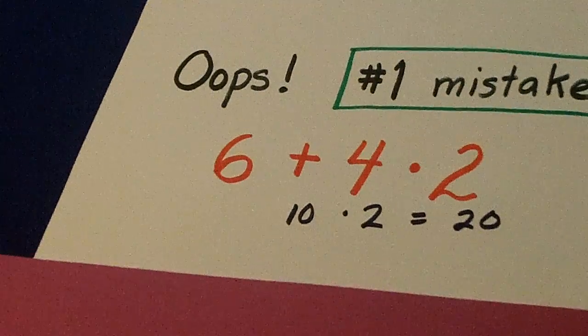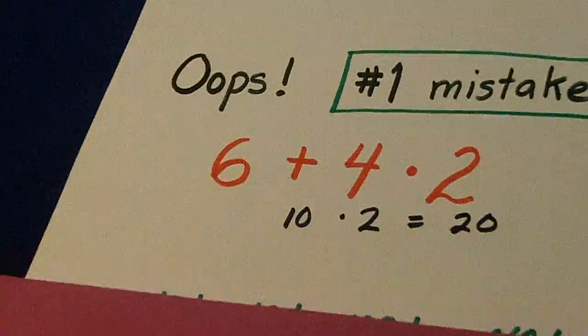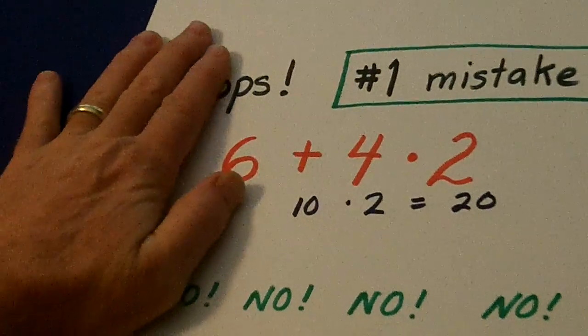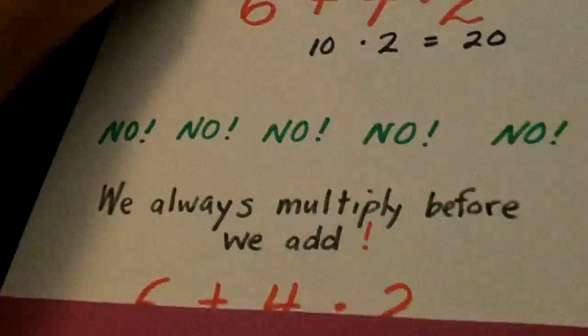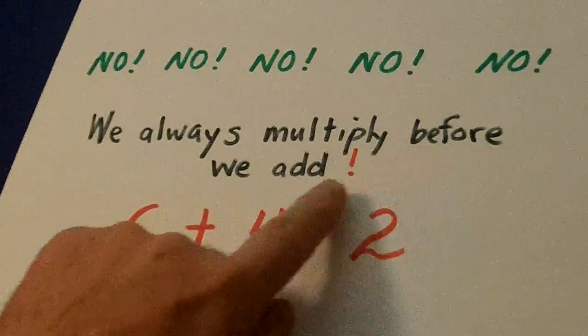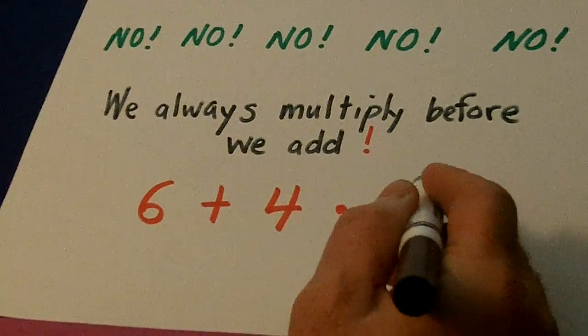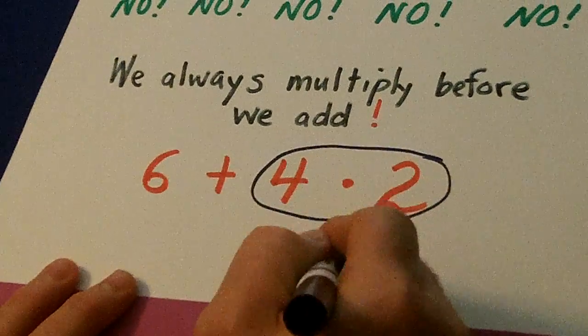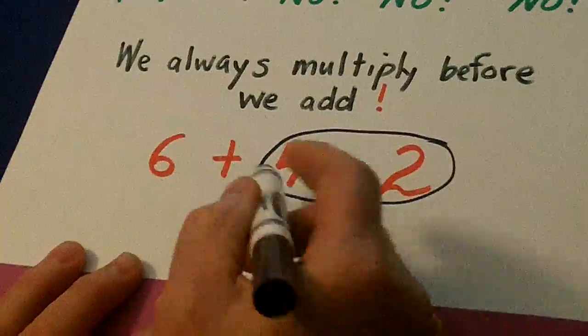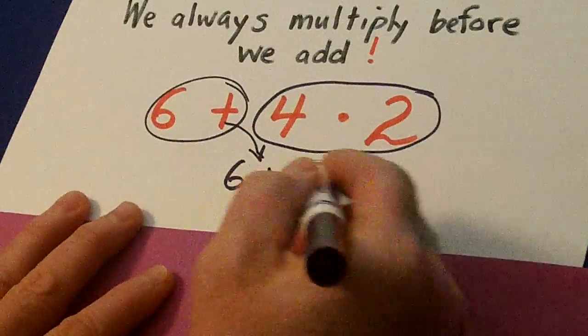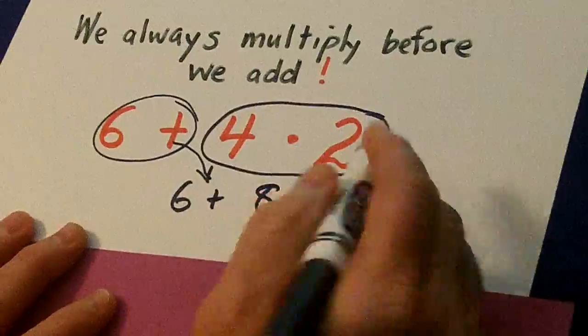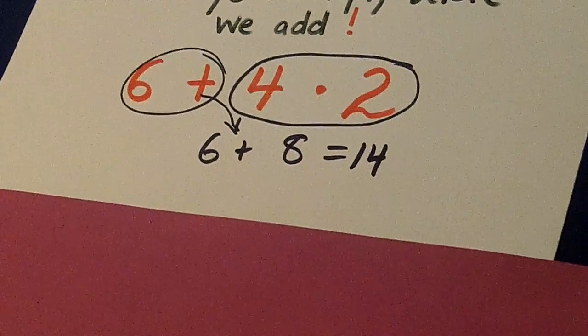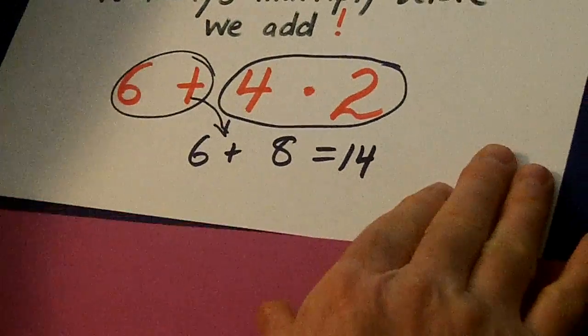But that's not correct. In the order of operations, no, no, no, no, no. We always multiply before we add. So this has to be done first. 4 times 2 is 8, and then 6 plus 8, we bring this down right here. 6 plus 8 is 14. So there is an order that we have to follow, and this lesson is about that order.